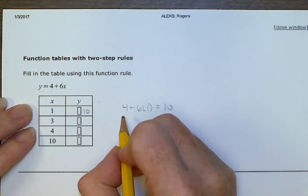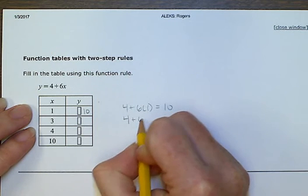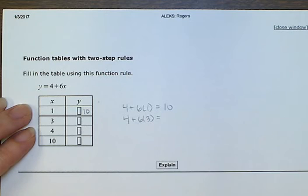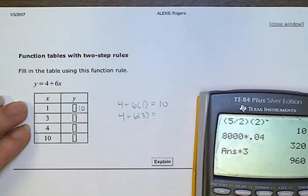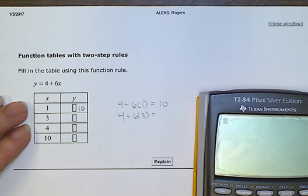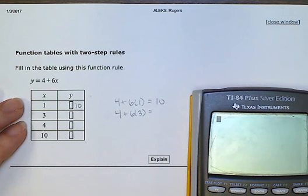On the next one, now we are putting a 3. And if we want, we can use our calculator. 4 plus 6 times 3. That gives me 22.